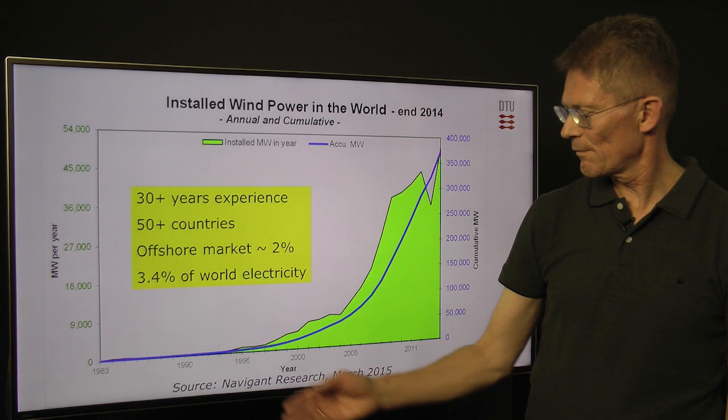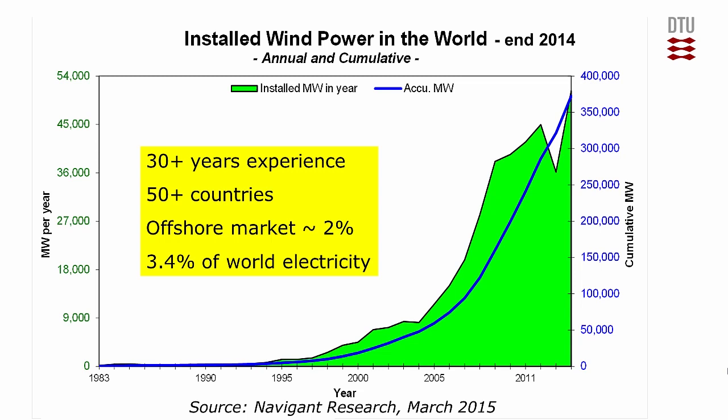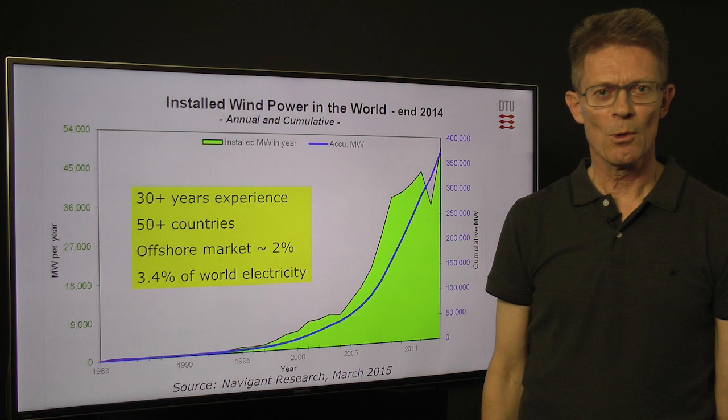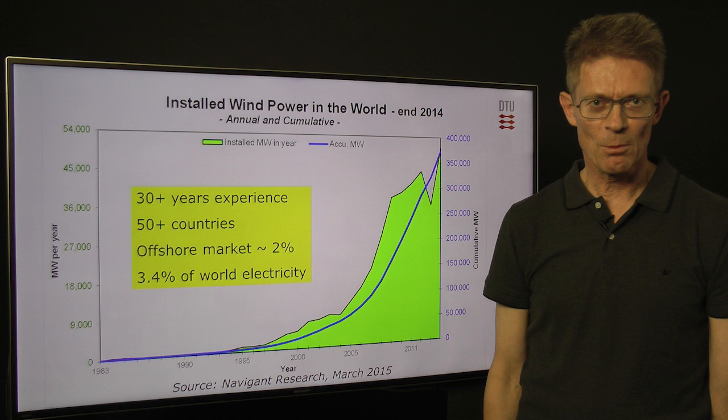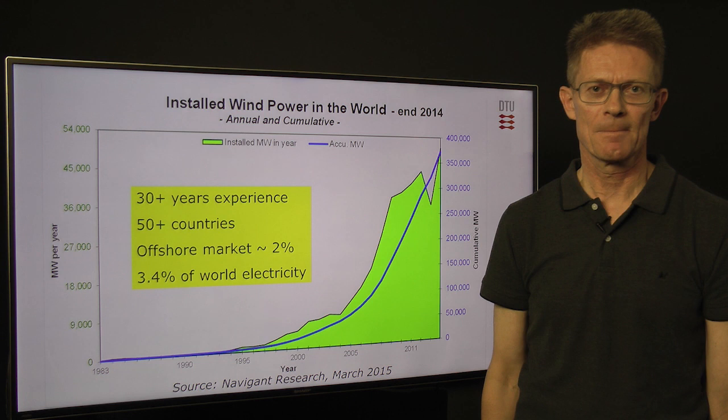We can see the very fast increasing rate at which we have been installing wind energy. The green numbers and green graph show how much is installed in megawatts every year, and the blue curve shows the accumulated installed capacity of wind energy up to 400 gigawatts. We now have more than 30 years of experience in more than 50 countries, and the offshore part of the market is about 2%. In 2014, wind energy generated 3.4% of the world's electricity demand.